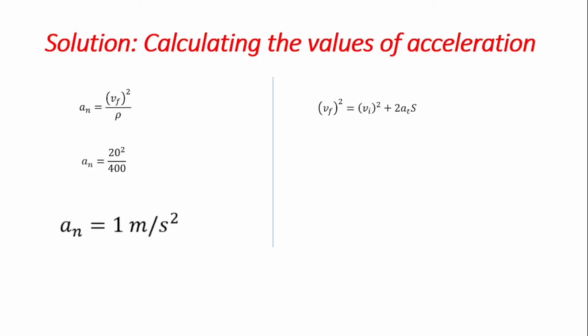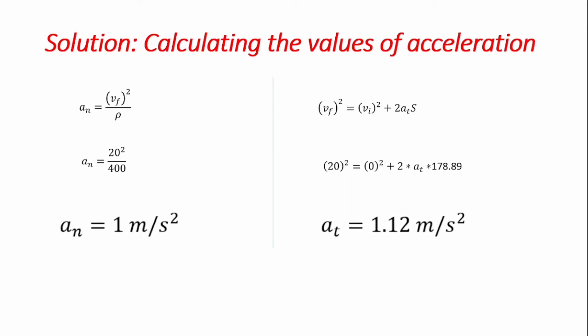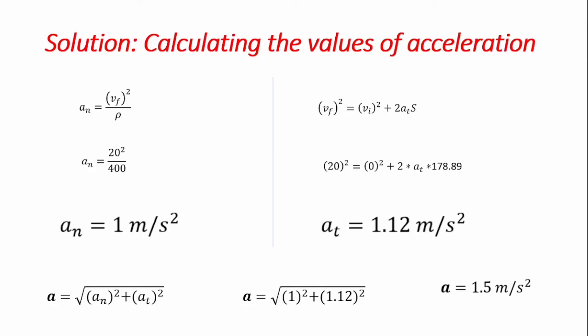Next, using the kinematic equation we identified as valid, and substituting all given variables, we make acceleration the subject of the formula and estimate the tangential component of acceleration to be 1.12 meters per second squared. Having both component values, we substitute them into the equation for total acceleration, and obtain a total acceleration of 1.5 meters per second squared.